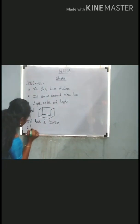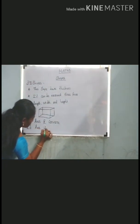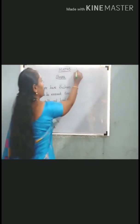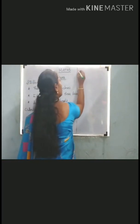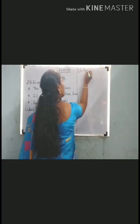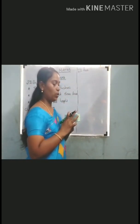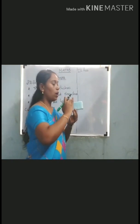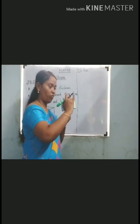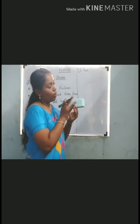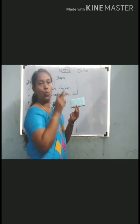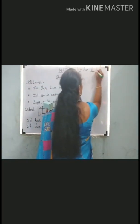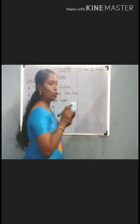It has 12 edges and 6 faces. The 6 faces are: 1 top face, 2 side faces, 1 front face, 1 back face, and 1 bottom face. This is the cuboid shape.